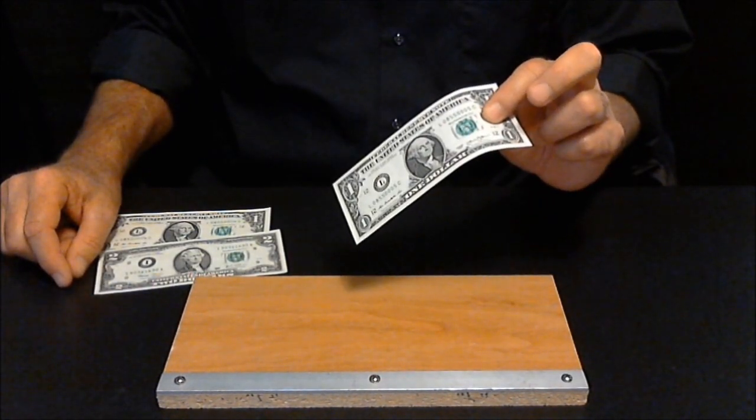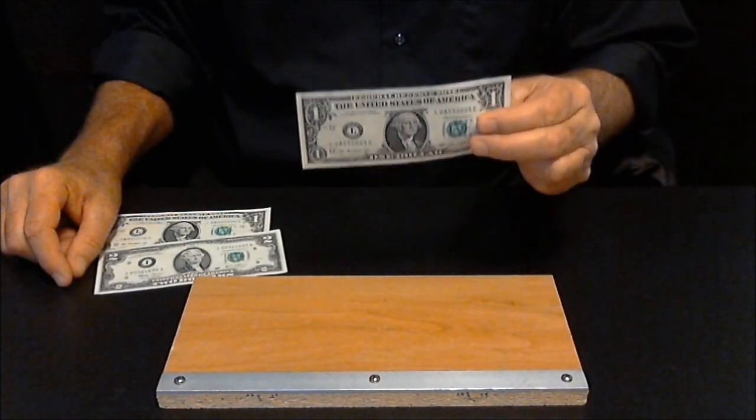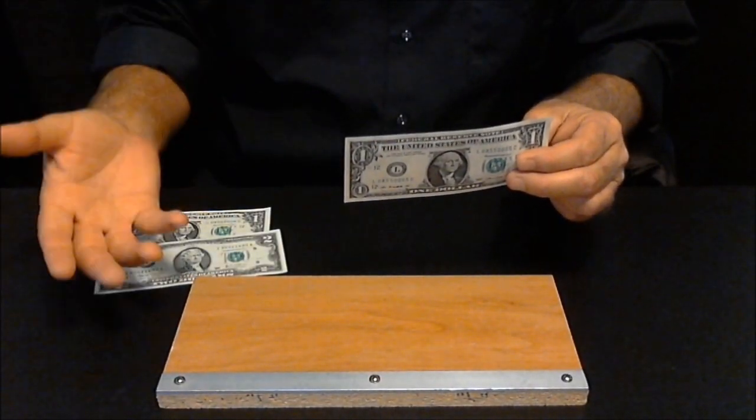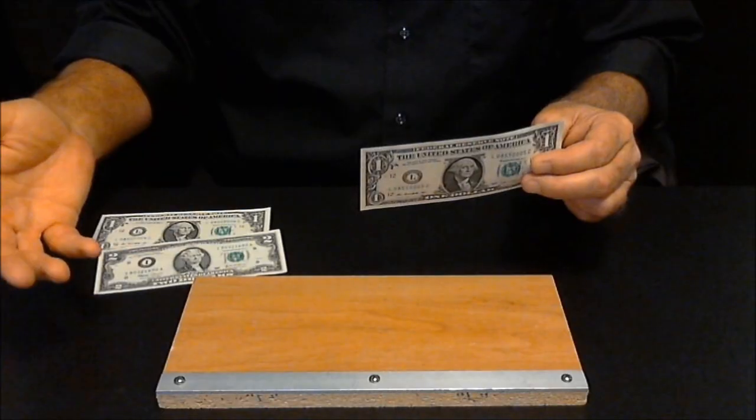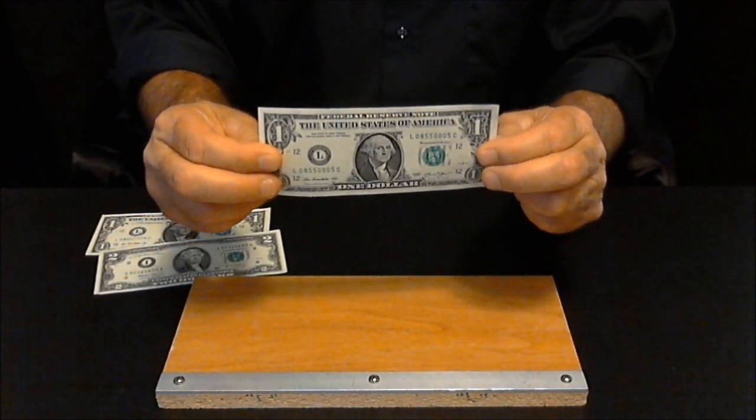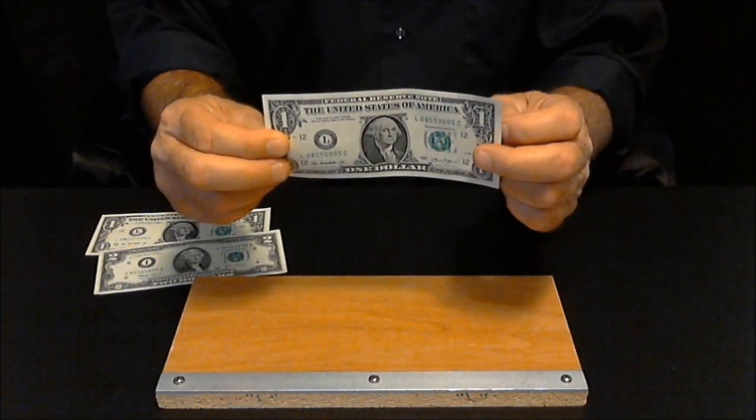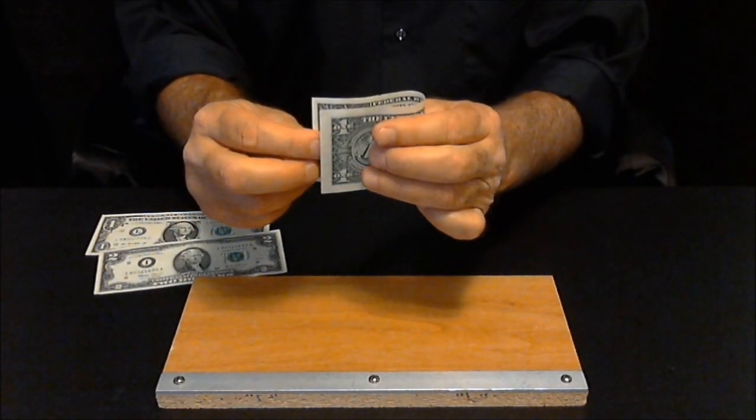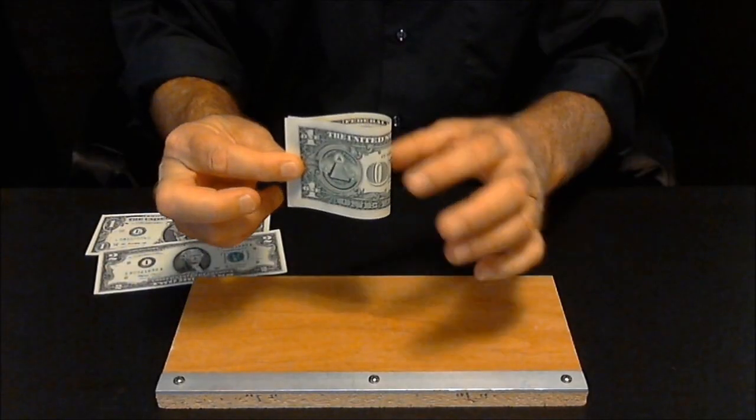Each of the three bills are going to be folded the exact same way. So once you do one, you do the other two the exact same way. Hold the bill in front of you like this. With your left hand, fold the bill around to meet like that. That's the first fold.